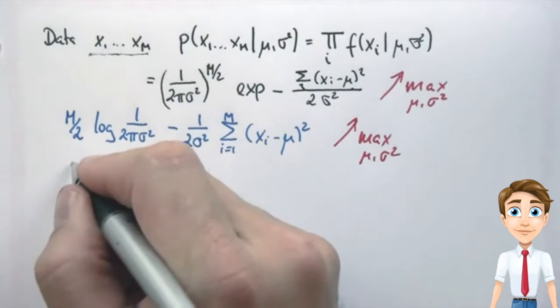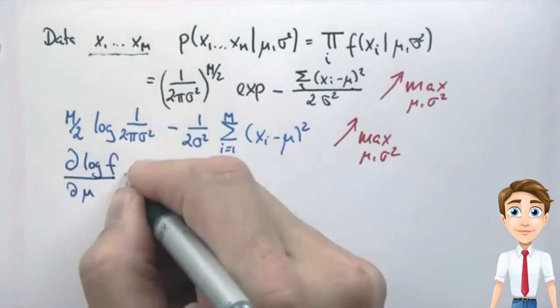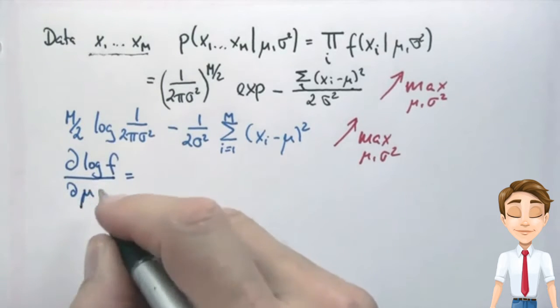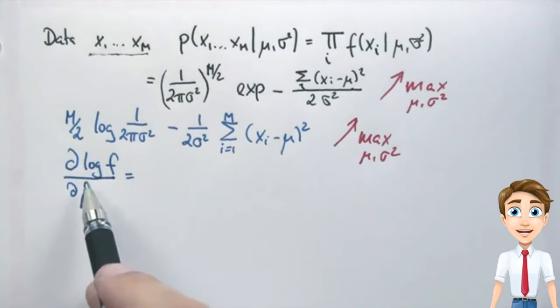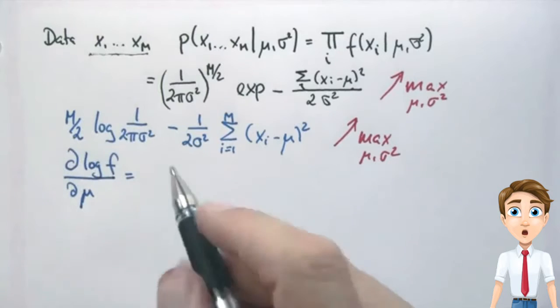The maximum is attained where the first derivative is zero. If we do this for our variable mu, and we take the log f expression and compute the derivative with respect to mu, we get the following. This expression does not depend on mu at all, so it falls out.